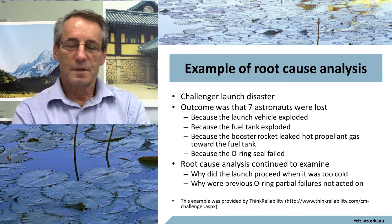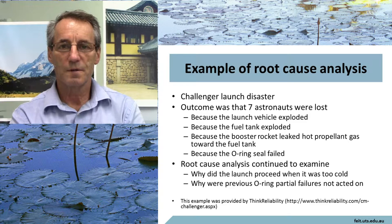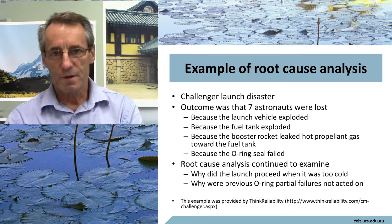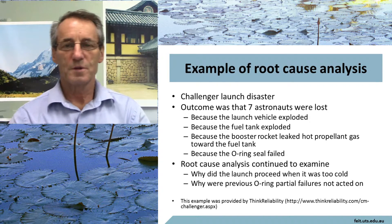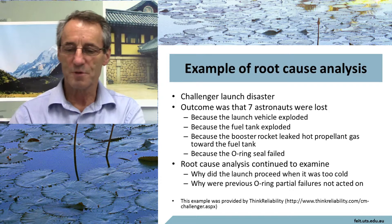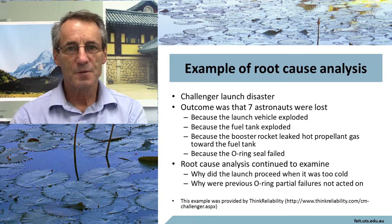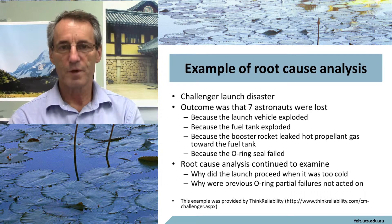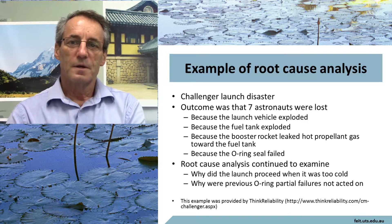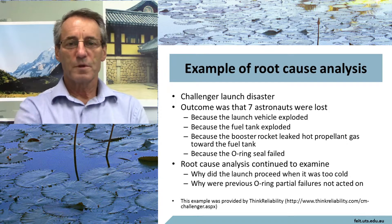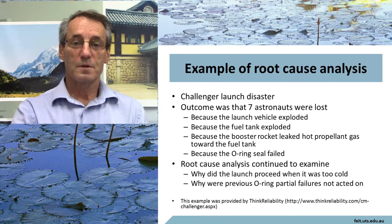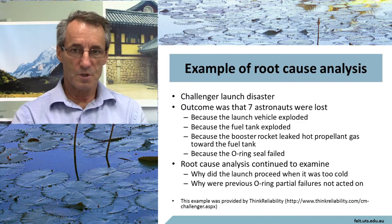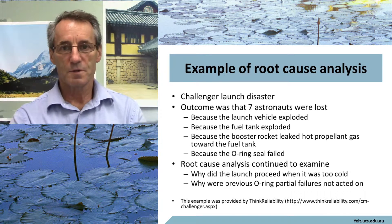So the outcomes that are evident that you might focus on is that we lost seven astronauts. Well how come we lost seven astronauts? We lost them because the spacecraft exploded. And the cause of that was that the external fuel tank exploded. So so far we've gone from: we lost seven astronauts and we didn't want to lose them — we lost them because the spacecraft exploded because the fuel tank exploded.